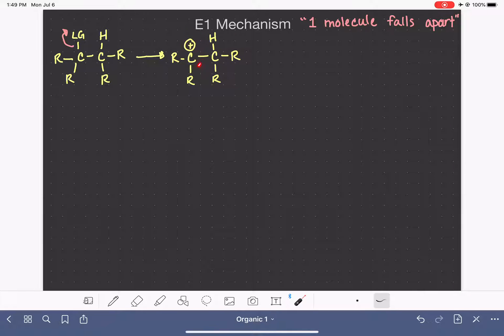Like with the SN1 mechanism, after we form the carbocation, we're going to look for ways in which we can stabilize the carbocation through rearrangement. Once it gets stabilized, then we bring in a base, which abstracts that important hydrogen. The carbon-hydrogen bonding electrons come down to form the carbon-carbon double bond, and we end up with an alkene.